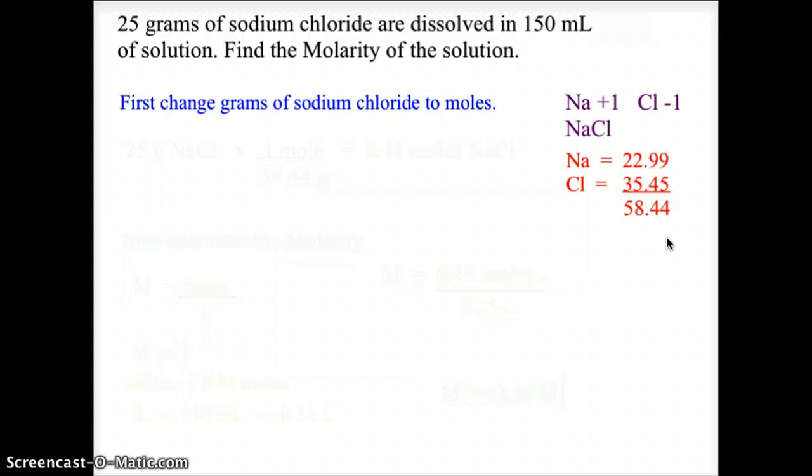This gives us a mass of sodium of 22.99 and a mass of chlorine of 35.45, for a total gram formula mass of 58.44. Taking 25 grams of sodium chloride, multiplying by 1 mole, and dividing by 58.44 grams, we get 0.43 moles of sodium chloride.